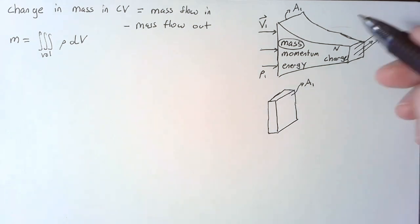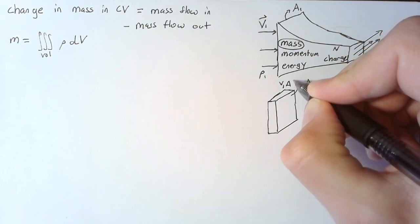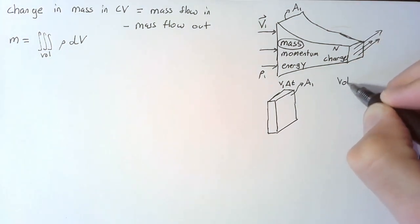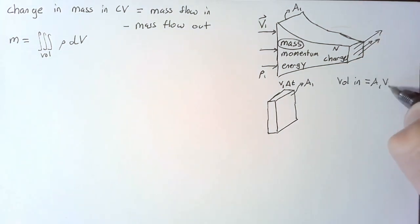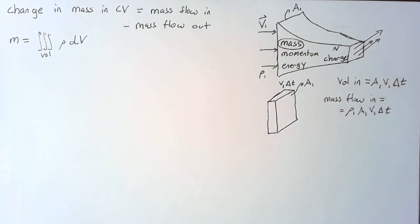If we multiply our velocity by some delta t, some amount of time, then we can actually get a length here, which means we can get a volume. So I'm going to call this distance right here just v1 delta t. And so we'll end up with our volume coming in as a1, v1, delta t. In order to get our mass flow in, we can just say that this is rho 1 multiplied by our volume.